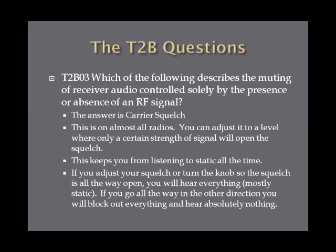Which of the following describes the muting of a receiver audio controlled solely by the presence or absence of an RF signal? The answer is carrier squelch. Carrier squelch is on most radios — you can adjust it to a level where a certain strength of signal will open or close the squelch, which keeps you from listening to static all the time. The goal is to find that sweet spot that picks up the signal you're looking for just right.